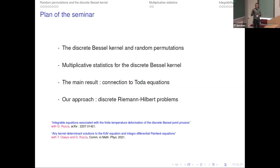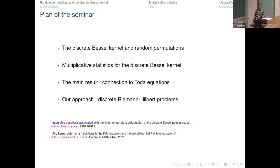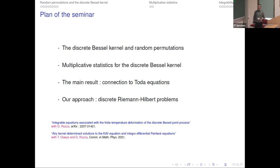This is the plan of the seminar. I will give a long introduction to the discrete Bessel kernel and explain how it appears in connection with the study of random partitions. Then I will introduce the main object we want to study, which are multiplicative statistics for the discrete Bessel kernel, and explain the main result, which says that these multiplicative statistics satisfy Toda equations. I will also mention previous results which are the continuous analog and are related to KdV equations, obtained with Julia Rutsas and Tom Claeys.